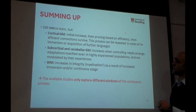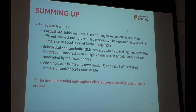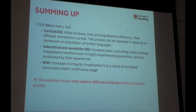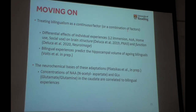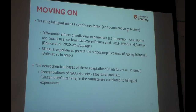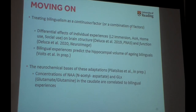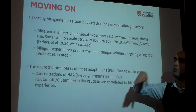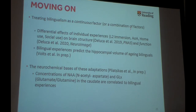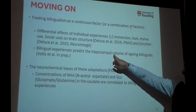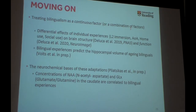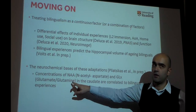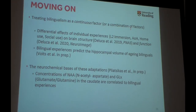The take-home message is that the available studies only captured different windows of this dynamic continuous experience. Everything can be put together if you look at the experiences of the bilingual. We treat bilingualism as a continuous factor, and we've found that differential effects of individual experience — immersion, age of acquisition, and how social use affects brain structure differently. We also know the bilingual experience predicts hippocampal volume in aging bilinguals. And now what we're looking at is how experiences affect the concentrations of chemicals in the brain — neurotransmitters — which themselves are markers of restructuring.